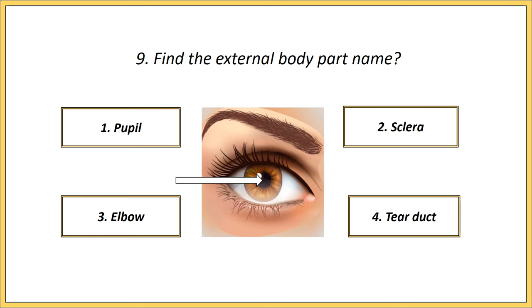Ninth one. Find the external body part name. Options: pupil, sclera, elbow, tear duct. Answer is pupil.